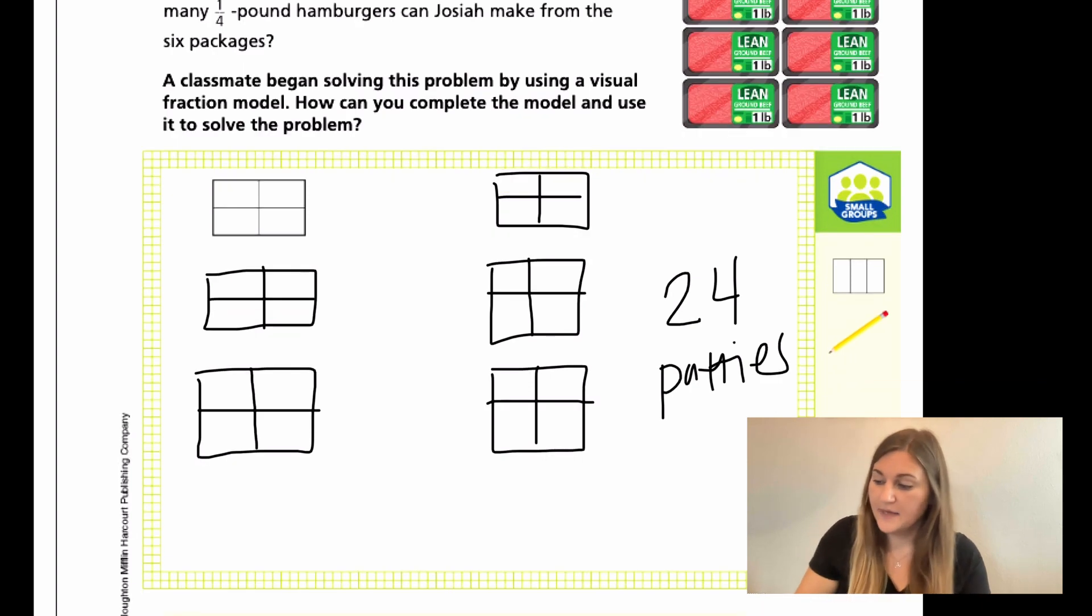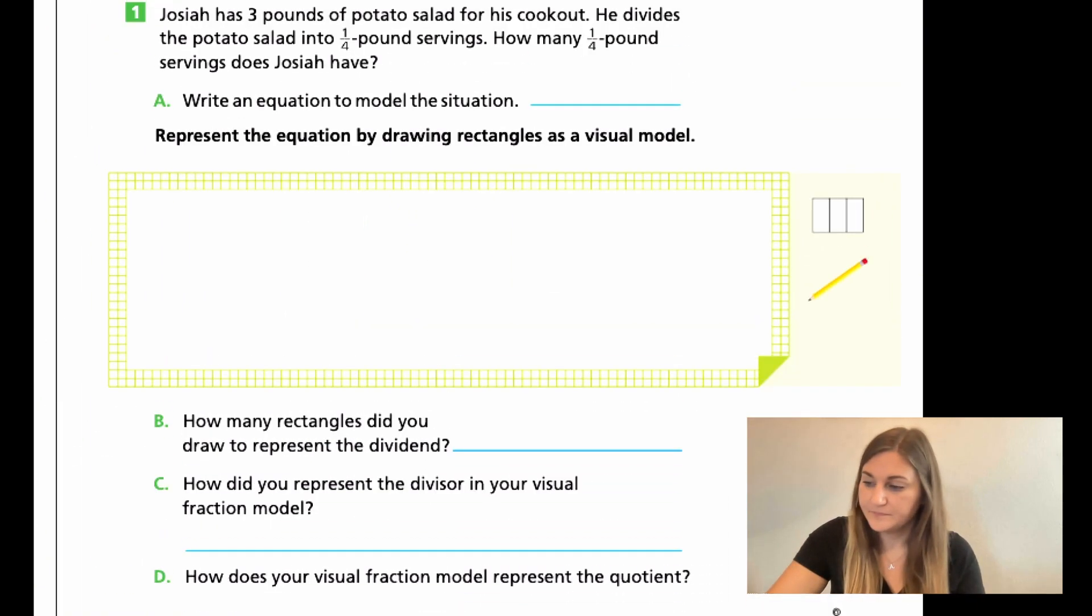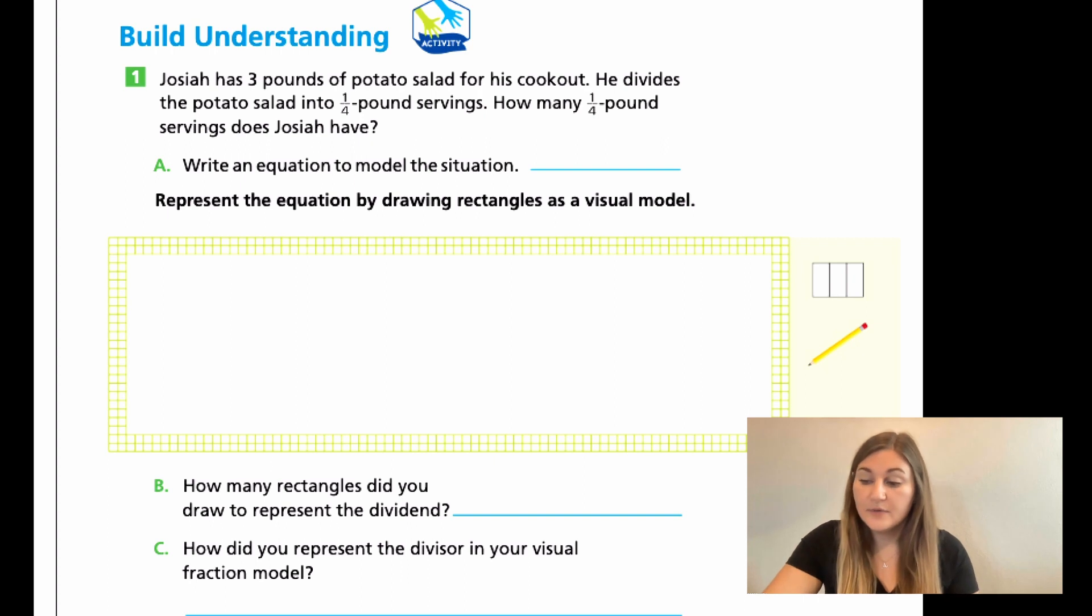Alright, let's go ahead and flip the page. We have a build your understanding. Question number one says, Josiah has three pounds of potato salad for his cookout. He divides the potato salad into one-fourth pound servings. How many one-fourth pound servings does Josiah have? So very similar here. The only thing that's changing is our whole number. It's changing from six to three, but we're still dealing with a fourth.